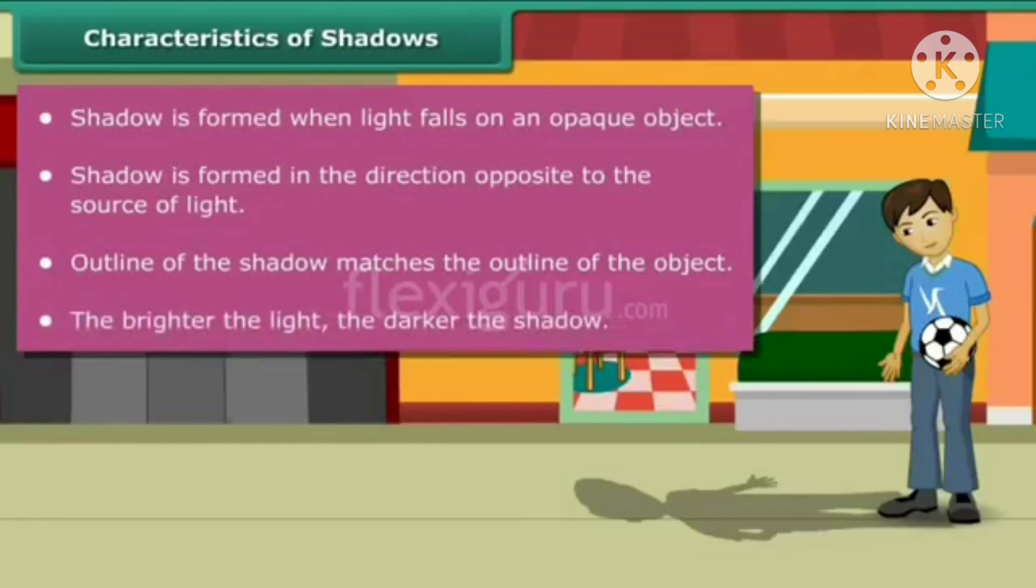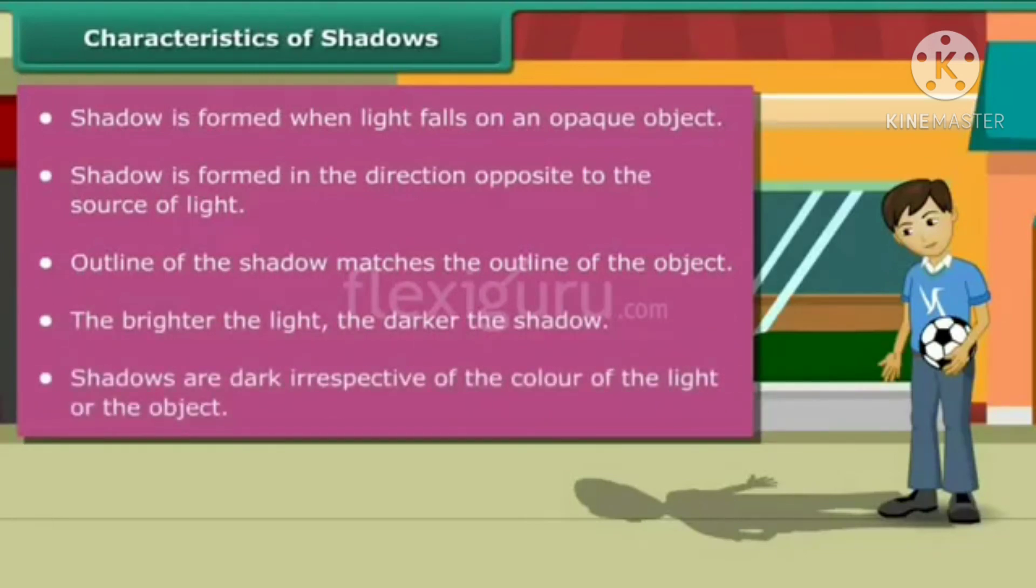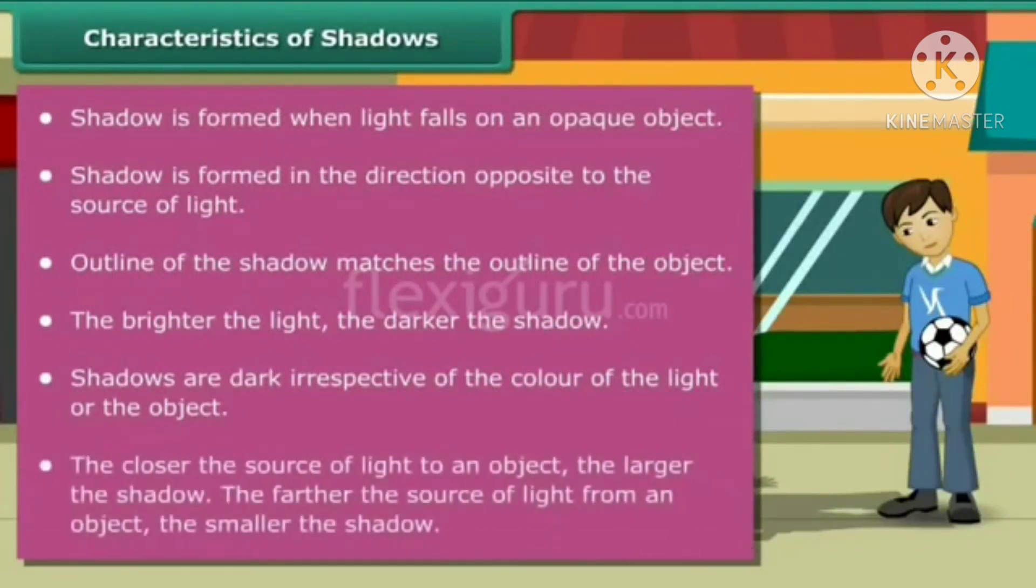The brighter the light, the darker the shadow. Shadows are dark irrespective of the color of the light or the object. The closer the source of light to an object, the larger the shadow. The farther the source of light from an object, the smaller the shadow.